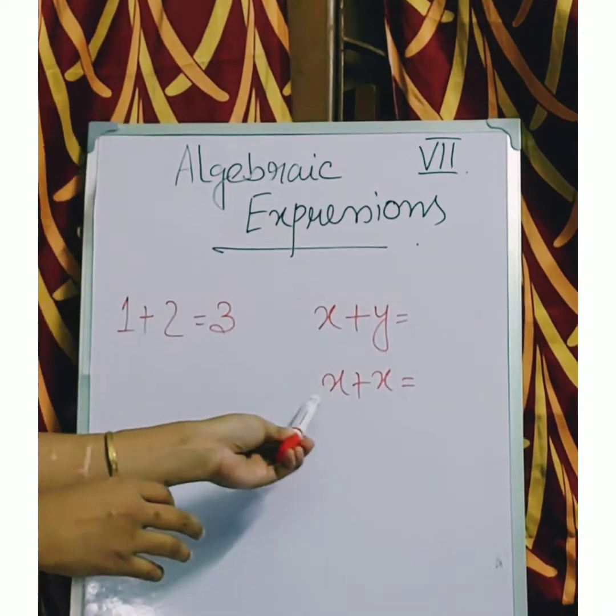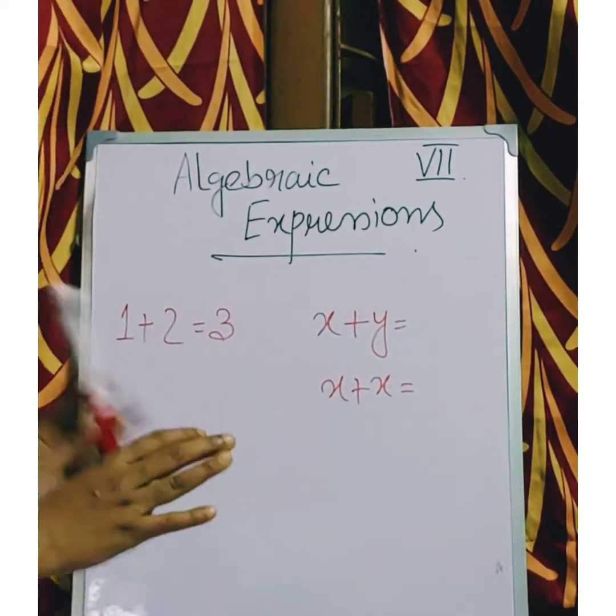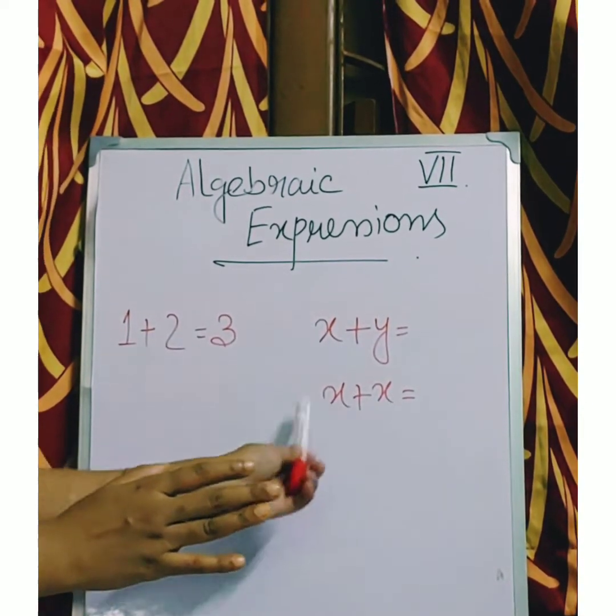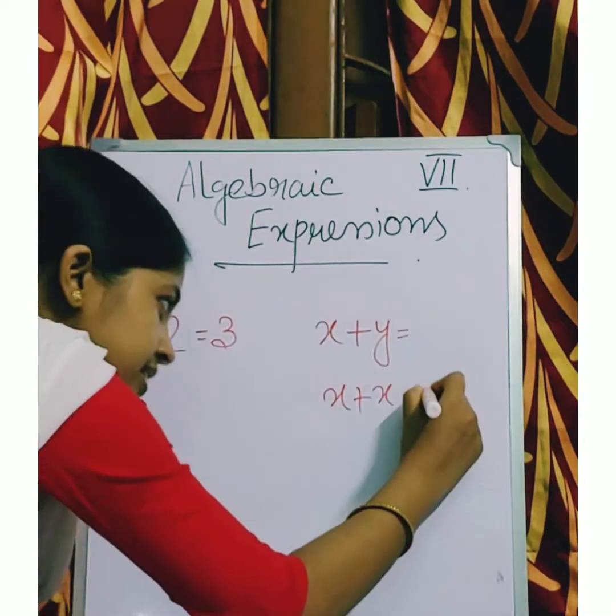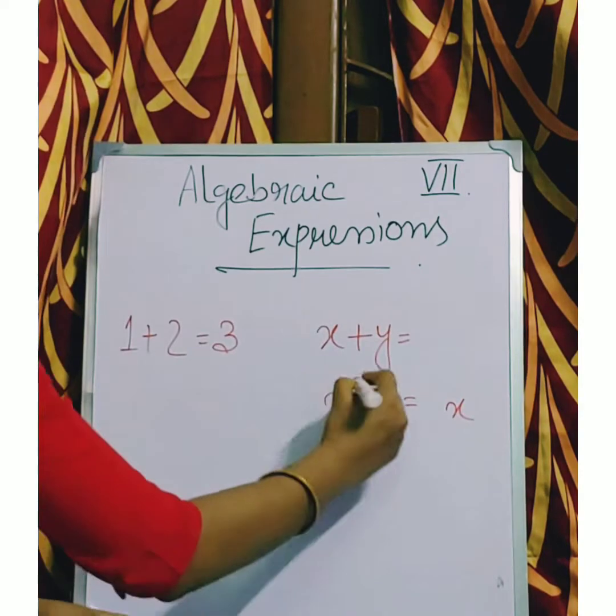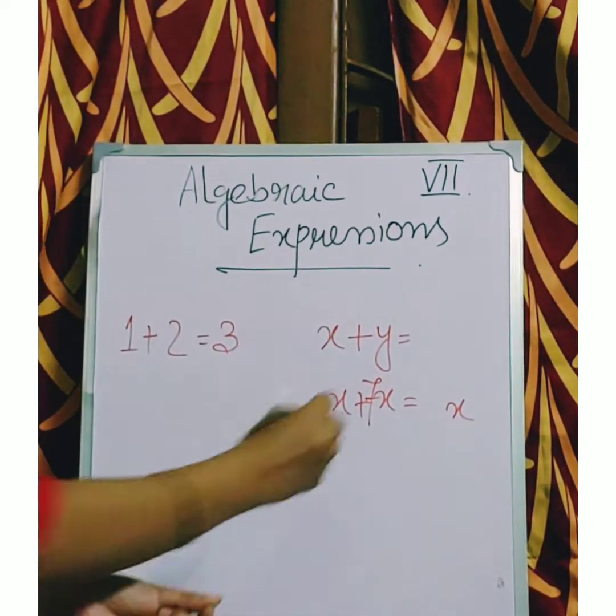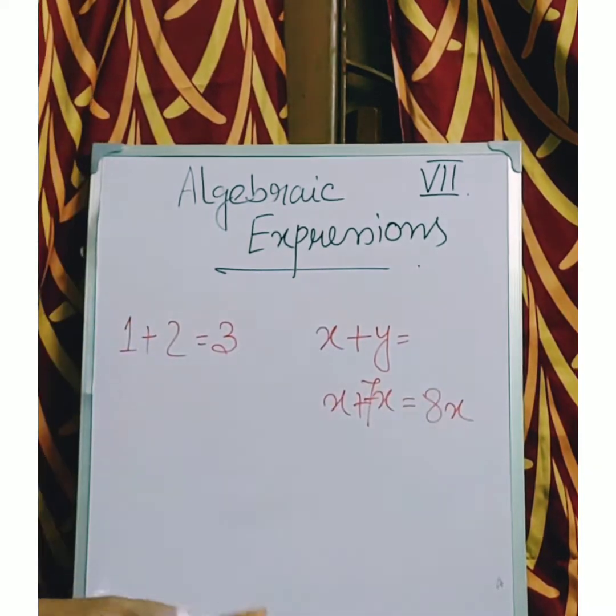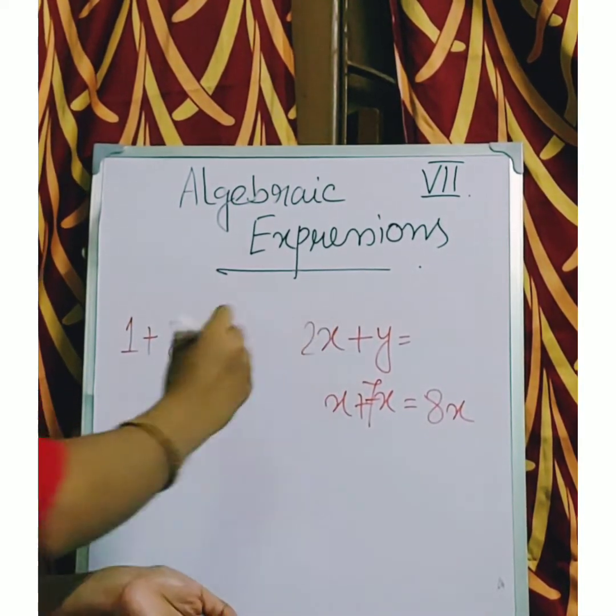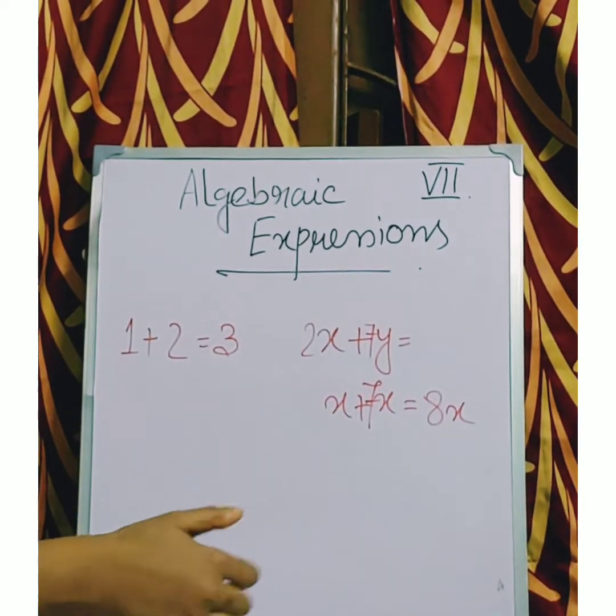Now you have to understand, when the variables are same, means x plus x, we can add them. Means here are how many x? 2. So the answer is 2x. If suppose here it is 7x plus 7x, answer 8x.